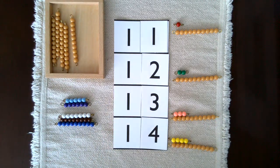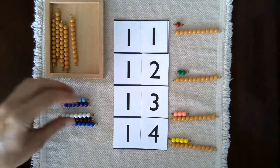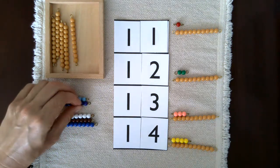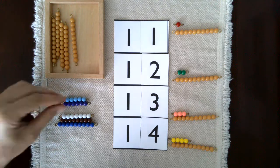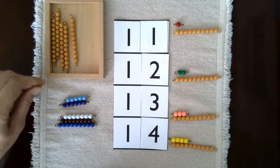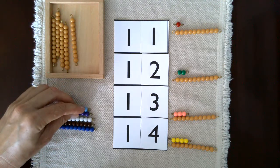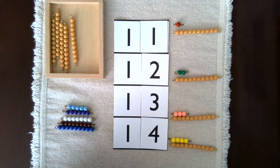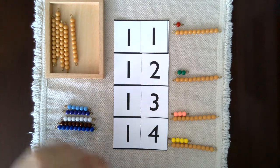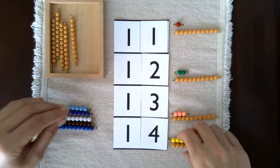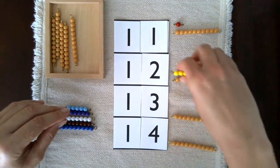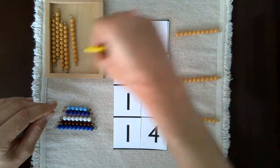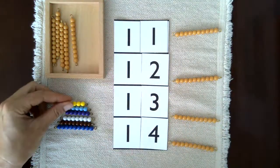And of course you would continue on. If the child catches on and remembers the quantities, how to make them, and the names of the numerals and can identify them, they can work independently and practice this as much as they like. And you would of course go all the way up to 19.